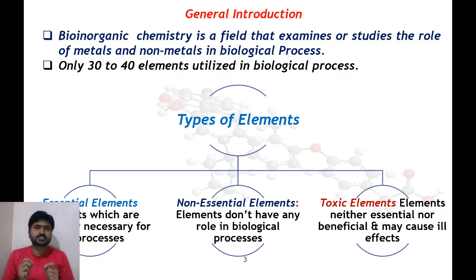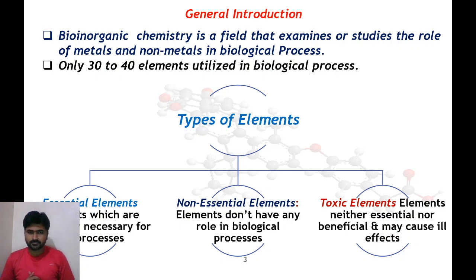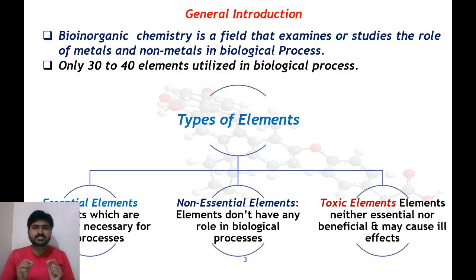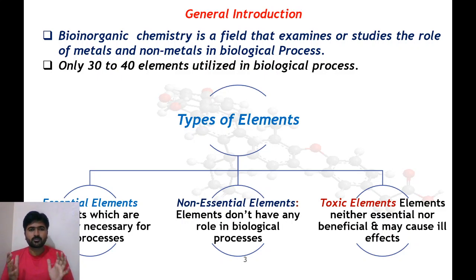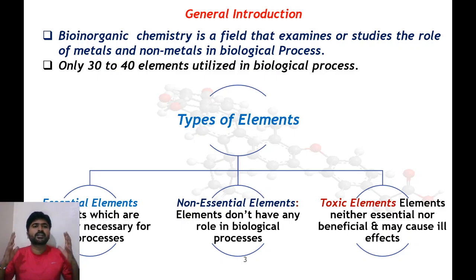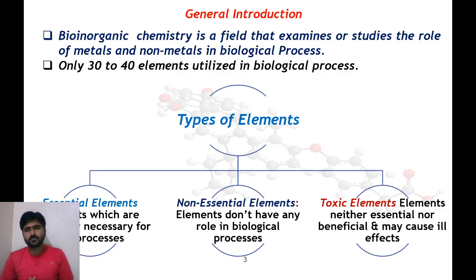Bio-Inorganic Chemistry is the branch of chemistry which deals with the study of the role of metals and non-metals in the biological process. In another way, Bio-Inorganic Chemistry is a field that examines the role of metals and non-metals in biological processes. Basically, there are only 30 to 40 elements utilized in biological processes — not all 118 elements of the periodic table, but only around 30 to 40 elements which are useful and utilized in the biological process.